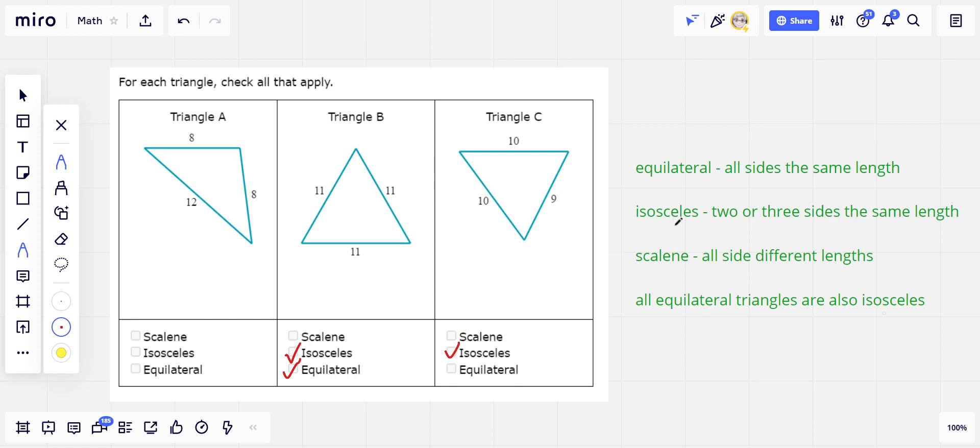So equilateral, isosceles, and then we have scalene. And scalene means all the side lengths are different. So if you look at this one, triangle A, we have 8 and 8 and 12. That's not scalene. 8 and 8 are the same. So that's isosceles, the one that has two sides the same length. It's not equilateral though because the 12 is different from the 8.